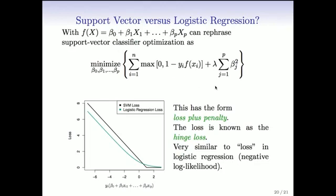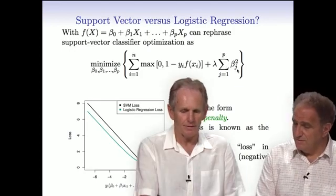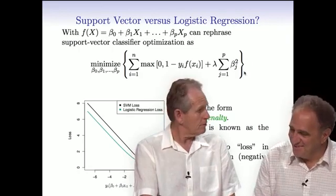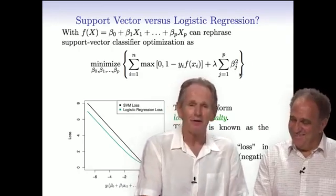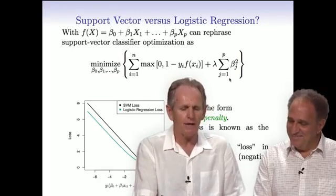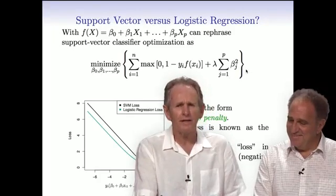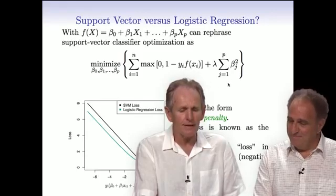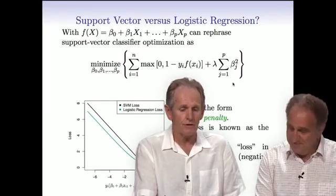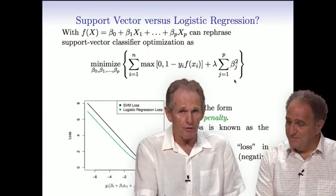That's called the hinge loss. If you optimize this problem, this criterion with respect to the betas, the solution is equivalent to the support vector machine. Well, that's not obvious. It's pretty hard. The derivation is not so easy. It's very hard. Well, it's not very hard, but it's quite hard to map this to the other one.